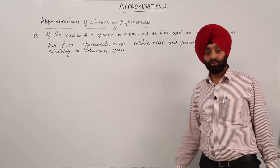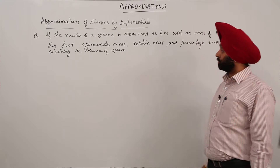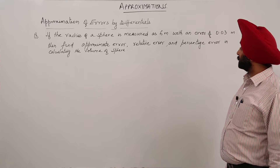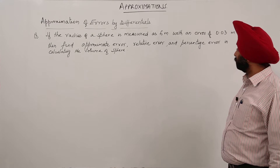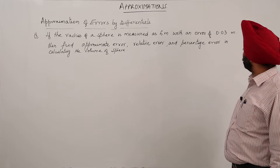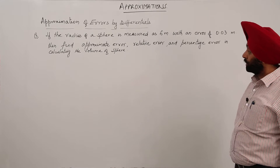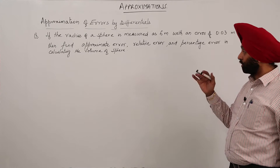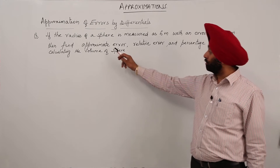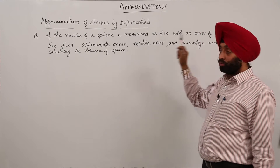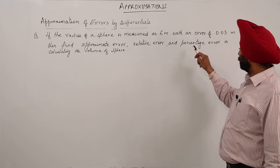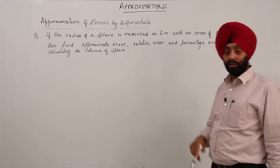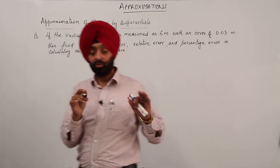We have a question on errors: if the radius of a sphere is measured as 6 meters with an error of 0.03 meters, then find the approximate error, relative error, and percentage error in calculating the volume of the sphere.